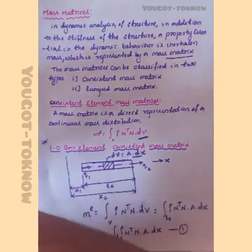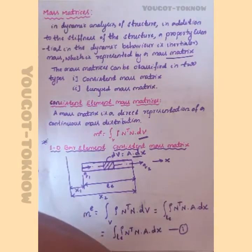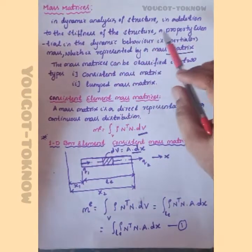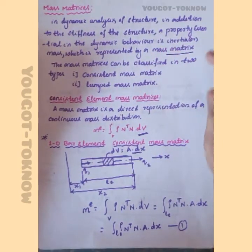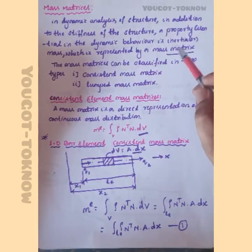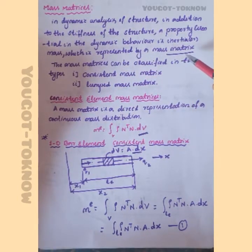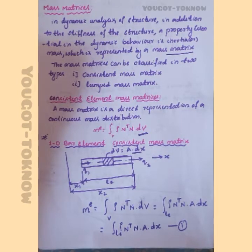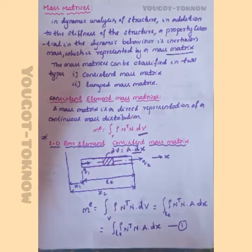We will go to the next topic called mass matrix — how to determine your mass matrix for finite elements. In dynamic analysis of a structure, in addition to the stiffness of the structure, a property essential in dynamic behavior is inertia or mass, which is represented by the mass matrix. The equation used is mx double dot plus kx equals zero. There are two types of mass matrices: the consistent mass matrix and the lumped mass matrix.